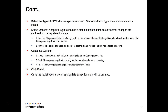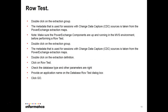The first option is Status. A capture registration has a status option that indicates whether changes are captured for the registered source or not. Active means to capture changes — set the status to Active. Inactive means to prevent data from being captured before the target is materialized — set the status to Inactive. The Condensed option: selecting None means the registration is not eligible for condensed processing; Part means partially condensed processing; Full means eligible for full condensed processing.